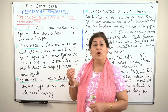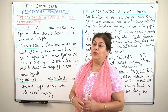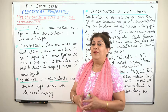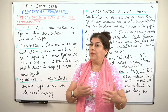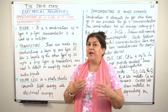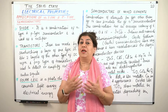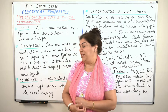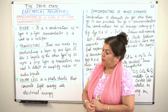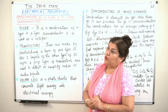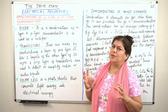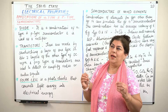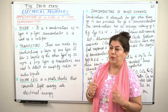Semiconductors belong to the 14th group. For example, you have silicon and germanium which act as semiconductors. Please refer to the previous video if you do not understand. In the previous video, I also told you that these semiconductors do not conduct electricity enough to be useful.